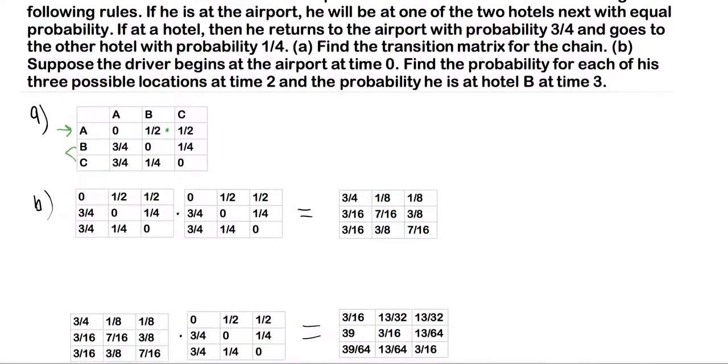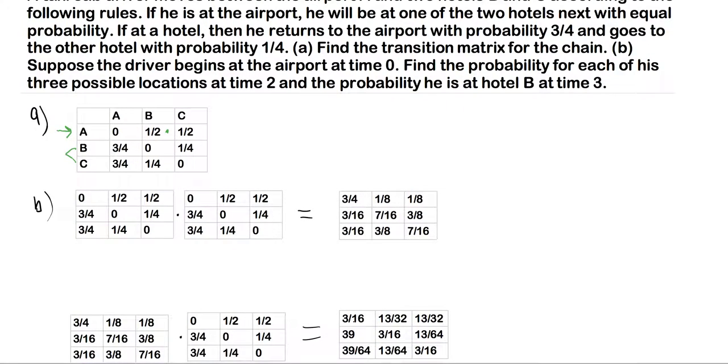Now moving on to part B, suppose the driver begins at the airport at time zero. Find the probability for each of his possible three locations at time two and the probability he is at hotel B at time three. So let's just focus on time two here. What we want is two steps from our time being zero. So what we want is this transition matrix twice. What we need to do is multiply this.